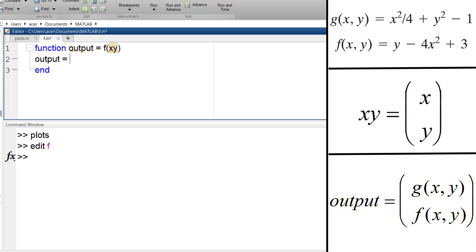x squared over four plus y squared minus one semicolon y minus four times x squared plus three. The problem is we still haven't defined x and y. They are stored inside this variable so I define x and y: x equals the first element of xy and y is the second one.